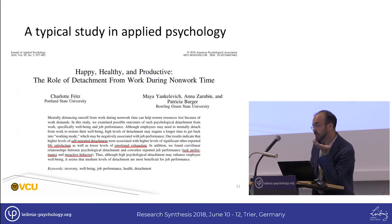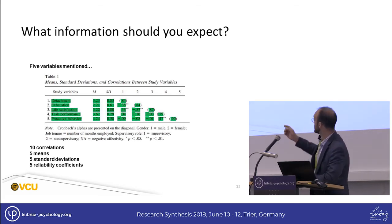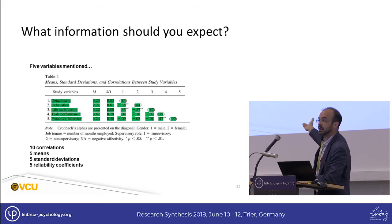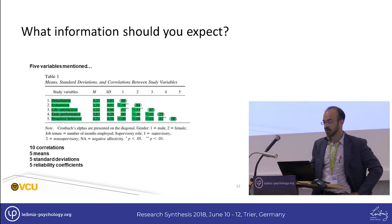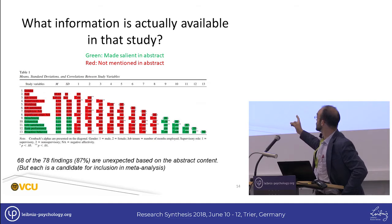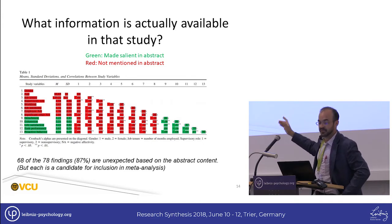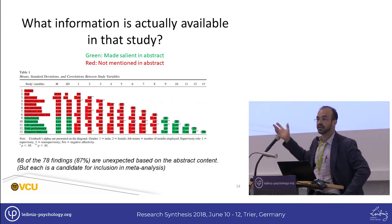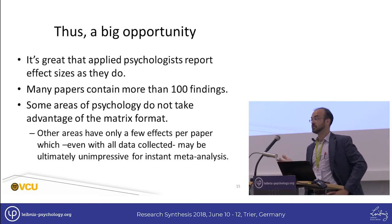If you think about the maximum information that could be in this article, you should picture these five constructs in a correlation matrix giving the correlation between any two constructs mentioned in the abstract, along with alpha values on the diagonal and means and standard deviations. Now I'll show you the matrix actually in that article. What you see in green is what I just described. What you see in red is stuff people wouldn't know about just from reading the abstract. This shows the power of the correlation matrix — it contains tons of information, and every single correlation is a perfectly viable candidate for inclusion in a meta-analysis. There's no rule that it has to be the central topic of the abstract.